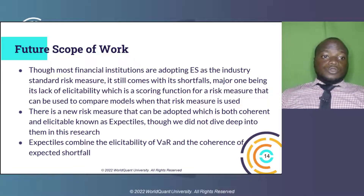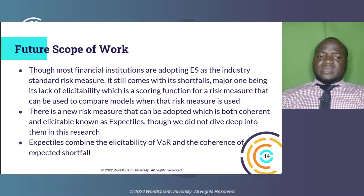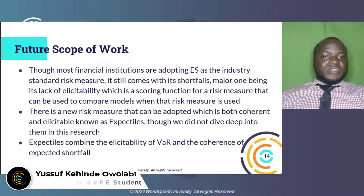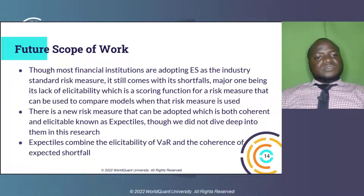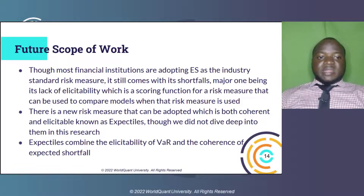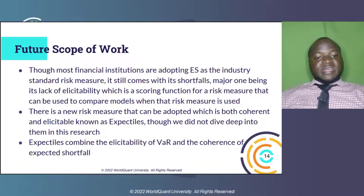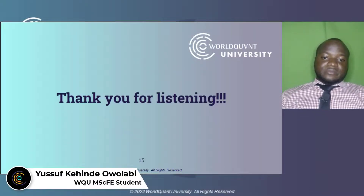Future scope of the work. Though most financial institutions are adopting ES as the industry standard risk measure, it still comes with its own shortfalls. The major one being its lack of elicitability, which is a scoring function for a risk measure that can be used to compare models. If there is a new risk measure that can be adopted which is both coherent and elicitable, known as expectiles — though we did not dive deep into them in this research — expectiles combine the elicitability of VaR and the coherence of expected shortfall. Thank you for listening. God bless.